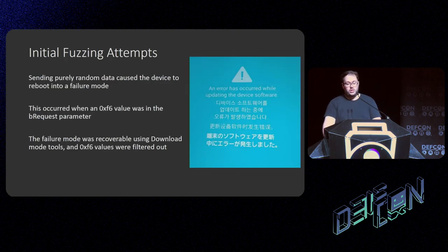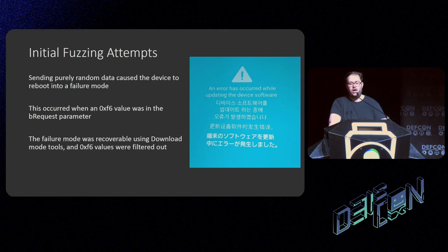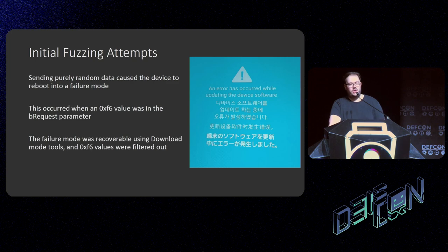During my initial fuzzing attempts, sending purely random data caused the device to reboot into a failure mode I couldn't recover from — every time it said 'an error has occurred updating the device software' — and I thought I'd bricked it. This occurred when the `0xF6` value was sent as the `bRequest` parameter. However, I found it was recoverable using download mode tools — specifically the command-line tool Heimdall, an open-source tool for manipulating download mode available on GitHub. As soon as I tried to do anything with that tool, the device decided it was working again.